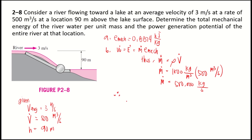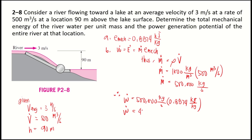Therefore, the power generation potential equals the mass flow rate times the mechanical energy per unit mass: 500,000 times 0.8874 kJ/kg, which equals 443,700 kilojoule per second. Since 1 kJ/s equals 1 kilowatt, this is 443,700 kilowatts, approximately equal to 444 megawatts. This is the power generation potential.